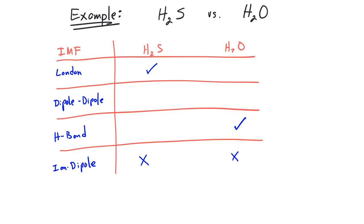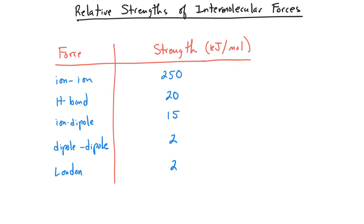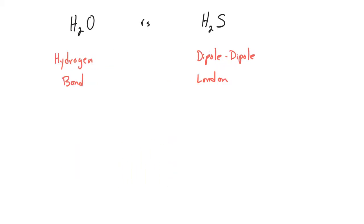So the question becomes: which molecule will have the higher boiling point based on the strength of the intermolecular forces? This table shows relative strengths of the intermolecular forces. Ion-ion forces, which are basically ionic bonds, are very strong. The next strongest is hydrogen bonding at 20 kJ per mole, followed by ion-dipole. The weakest are dipole-dipole and London forces. So in the case of water versus hydrogen sulfide, water can hydrogen bond, which is a very strong intermolecular force, while hydrogen sulfide has only dipole-dipole and London forces, both of which are fairly weak.